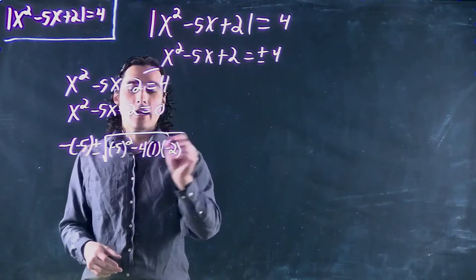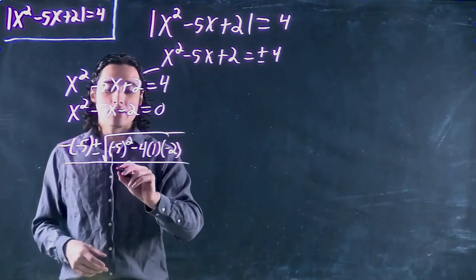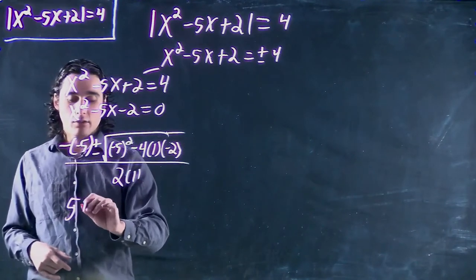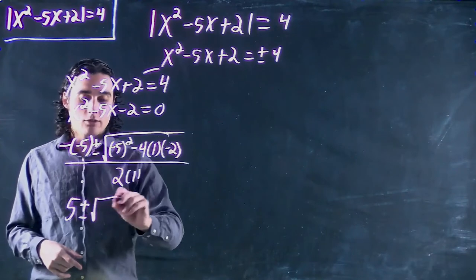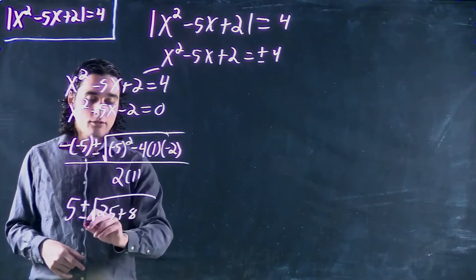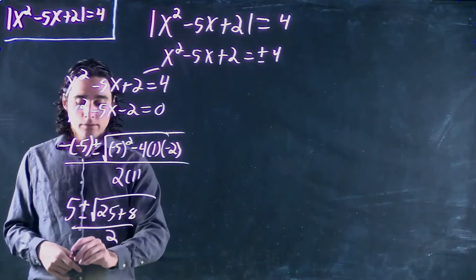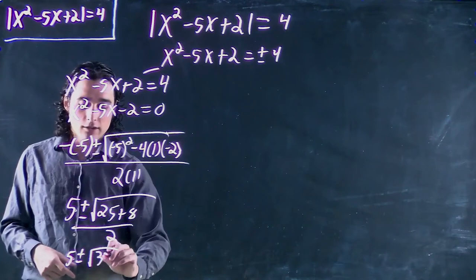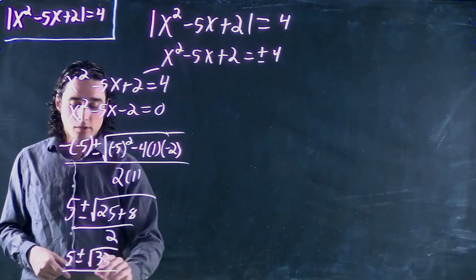And that entire top part divided by 2 times a, which in our case is 1. So we get 5 plus or minus square root of 25 plus 8 all over 2. Or 5 plus or minus square root of 33 all over 2.